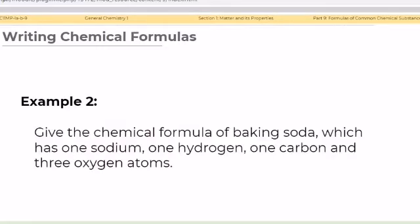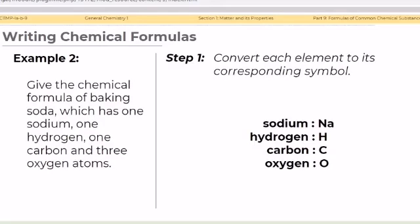Example 2: Give the chemical formula of baking soda, which has one sodium, one hydrogen, one carbon, and three oxygen atoms. Step 1: Convert each element to its corresponding symbol. The symbol for sodium is Na, hydrogen is H, carbon is C, and oxygen is O.